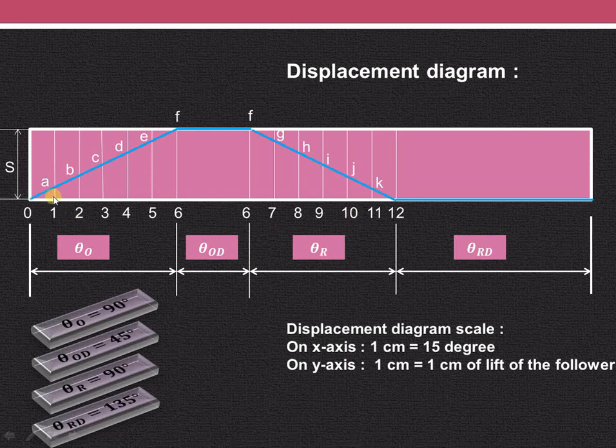So this 1A distance, this 2B distance, 3C, 4D, 5E and 6F. These distances for the outstroke as well as for return stroke. This 6F, 7G, 8H, 9I, 10J, 11K. These distances, they are important for drawing the cam profile.